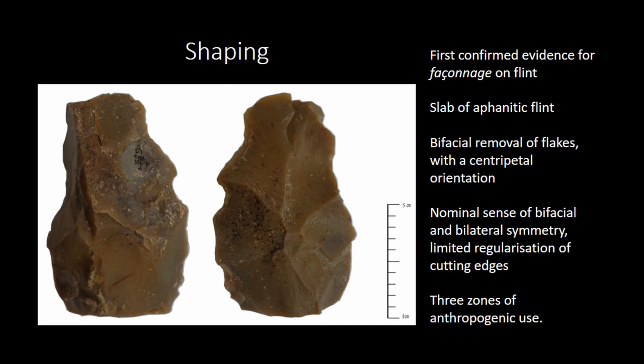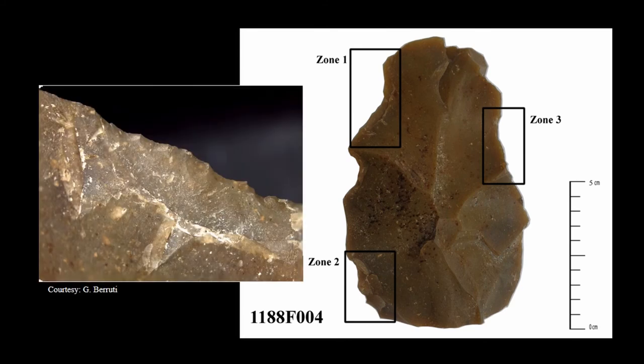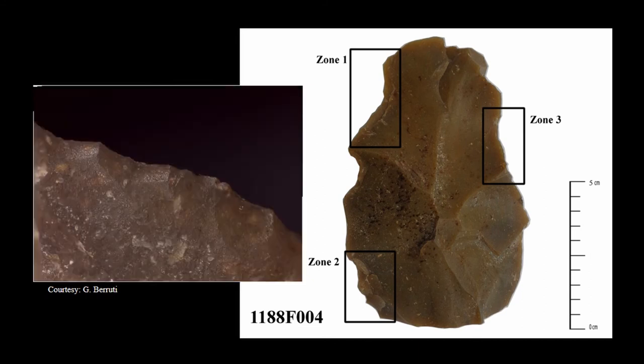It doesn't look beautiful, but there is bifacial removal on an aphantic slab, and this is the largest clasp in the entire assemblage — almost two times bigger than the other clasps. This is very similar to some of the bifaces found at Guado San Nicola, a MOTU site in the vicinity. To ensure it is not merely a core, we subjected it to microscopic analysis and found three zones of utilization, which Dr. Gabriel Berruti — a microscopy expert in Ferrara — said is indicative of intentional anthropogenic use.